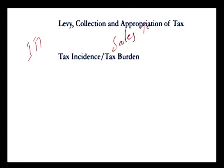In India we have taxes levied by central, state, and local governments. Where do these governments derive the right to levy taxes? I would suggest you refer to the 7th Schedule of the Constitution of India, which clearly mentions who has the right to levy particular taxes — what falls under the Union List, State List, and Concurrent List.